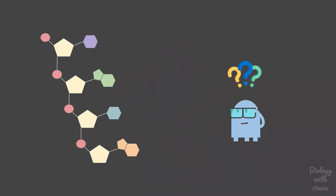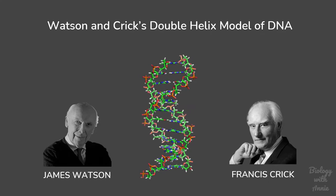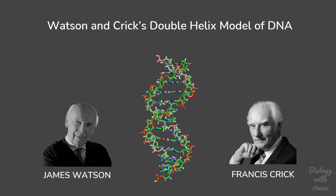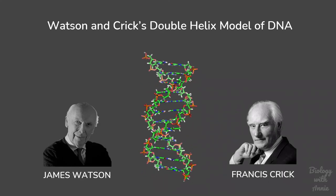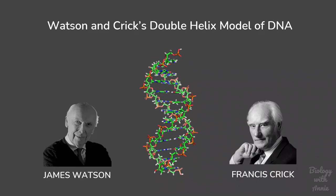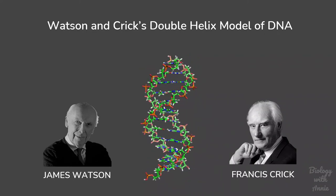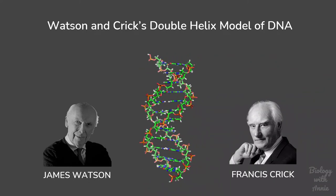That is when James Watson and Francis Crick proposed the double helix model of DNA, which provided key insights into how the genetic information is stored. Interestingly, they made this discovery without conducting any experiments of their own. Instead, they collected all the available data on the chemistry of DNA to come up with this model.